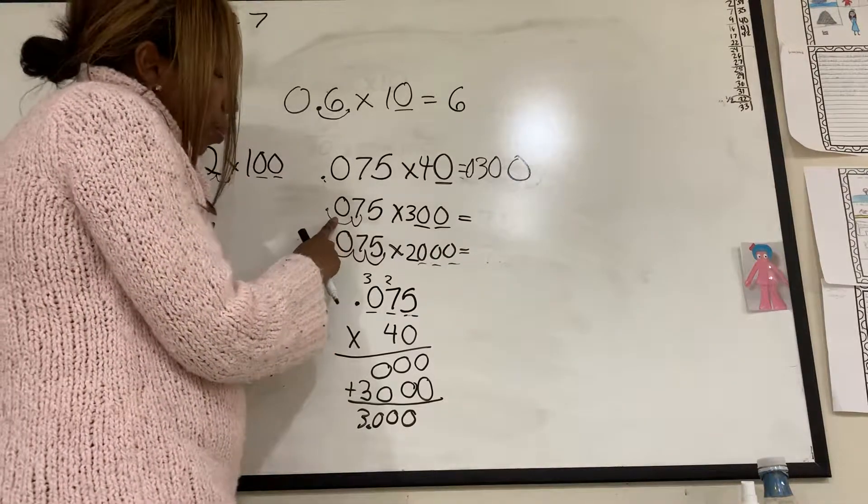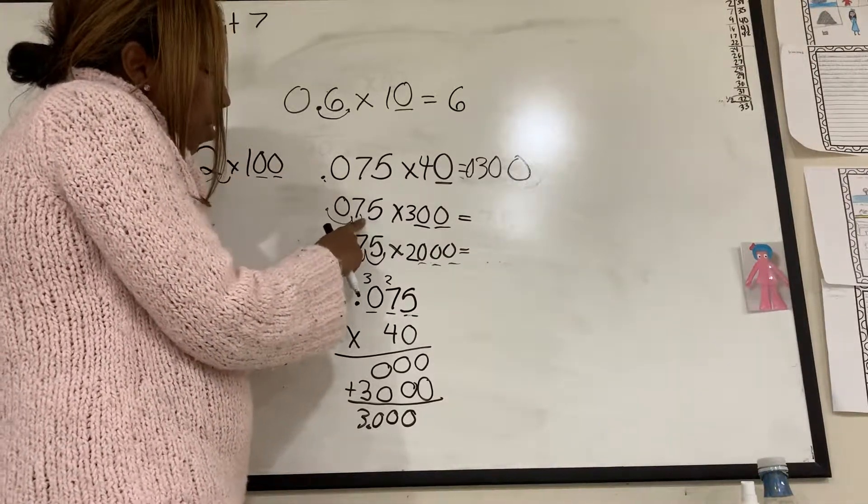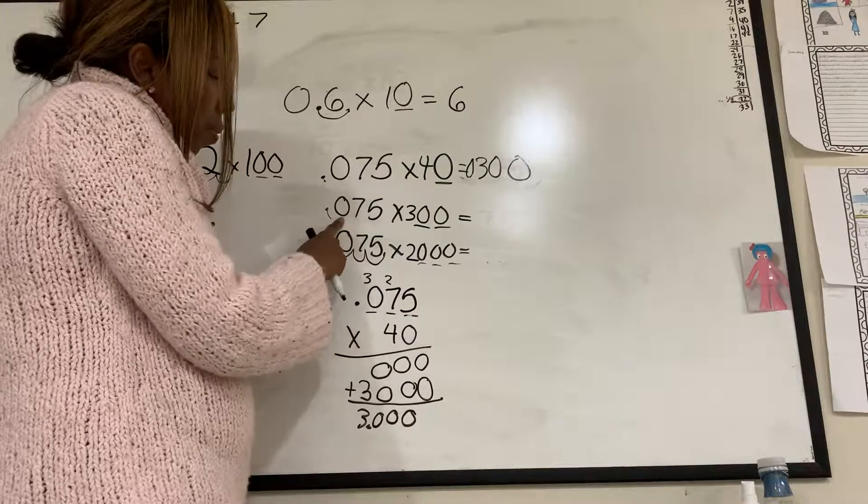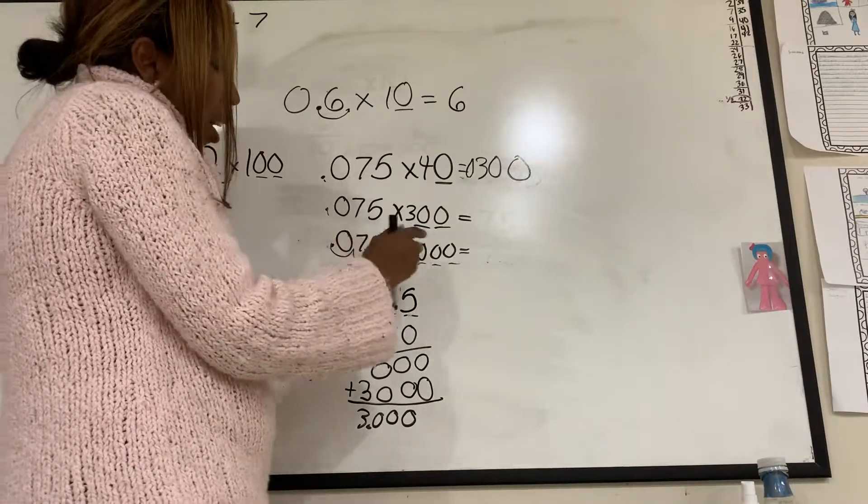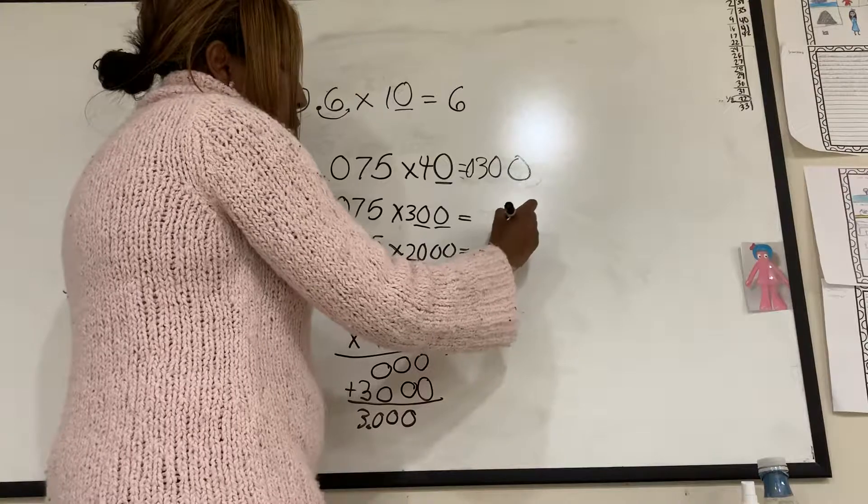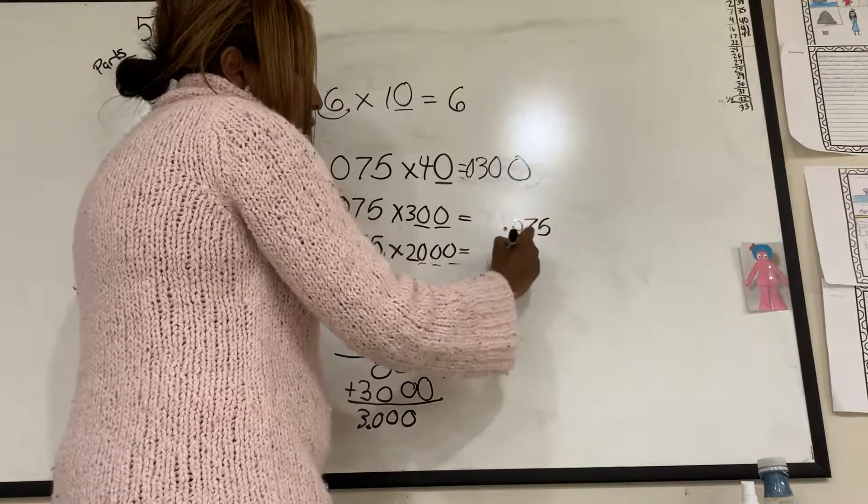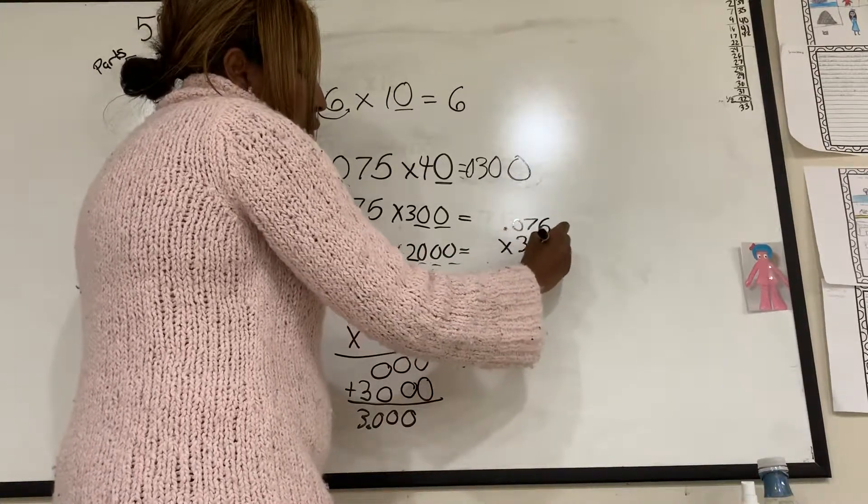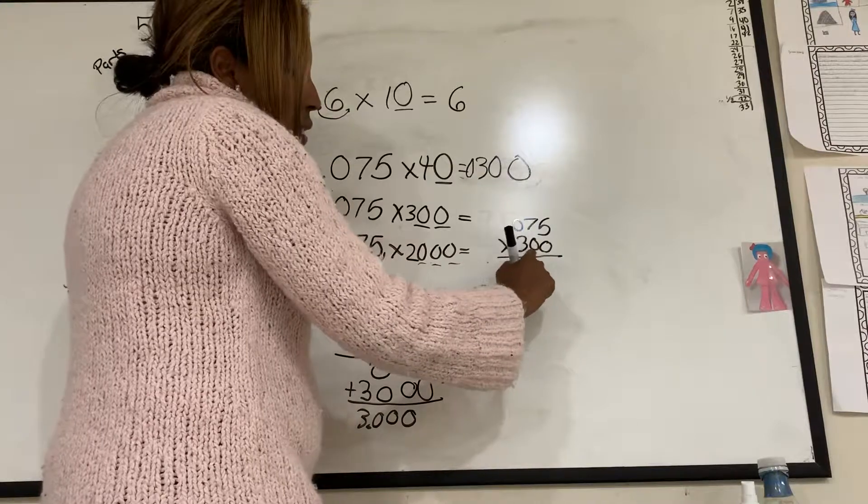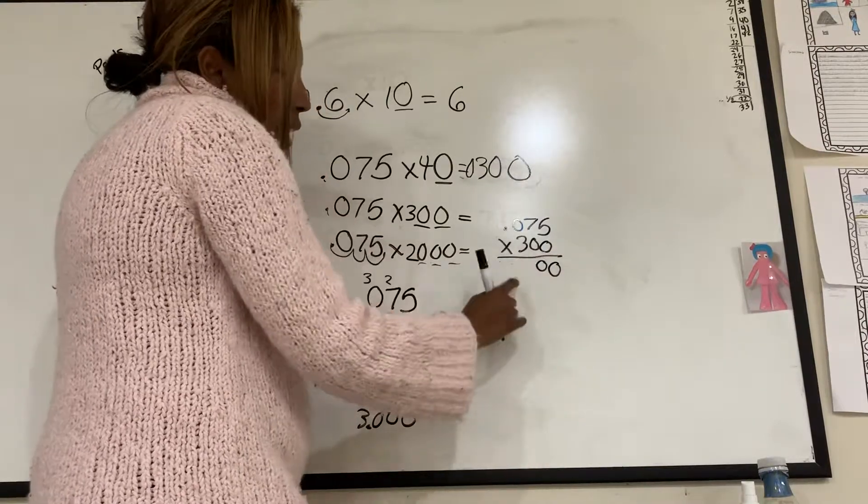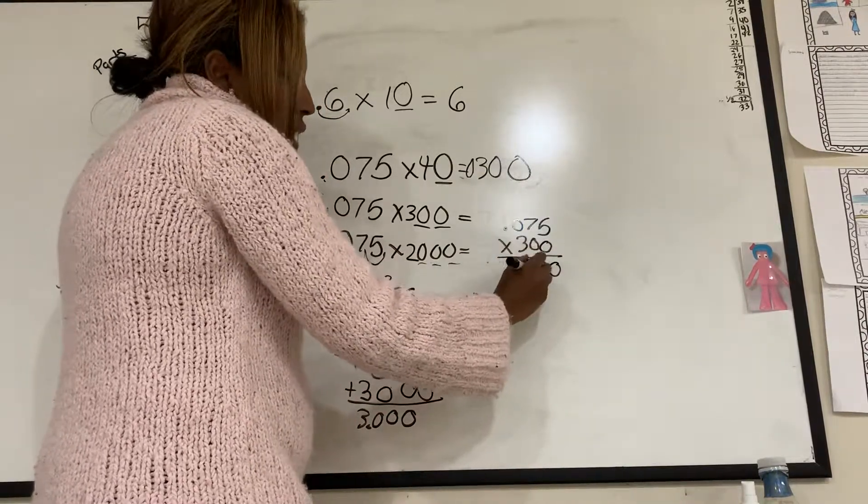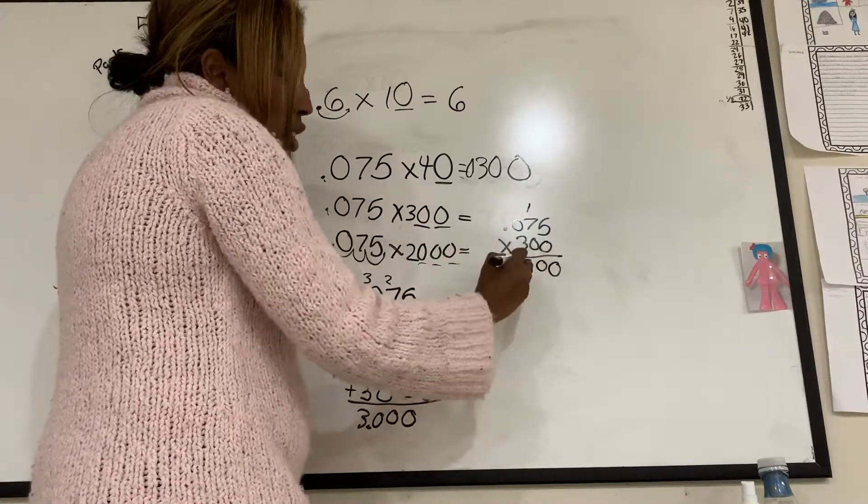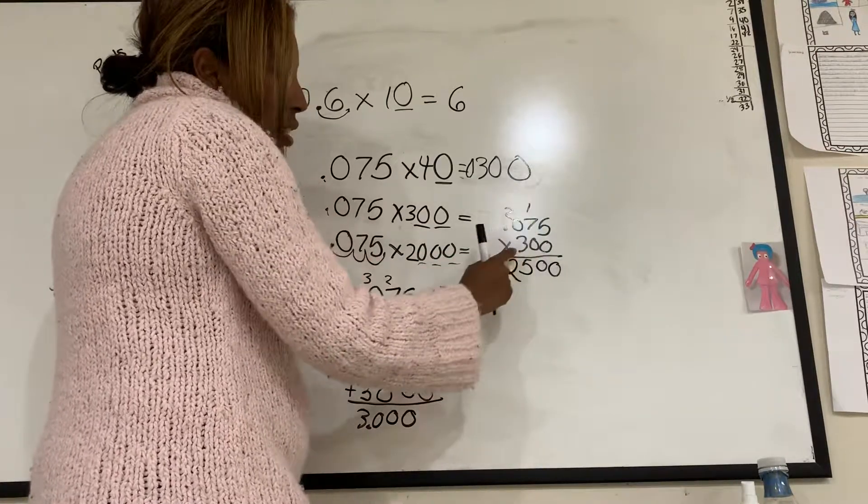All right. So let's try this next one. If I have 0.075, right? Times 300. So I know I have 0.075 times 300. I know I have 2 zeros. So I'm just going to bring them down. 3 times 5 is 15. Carry the 1.